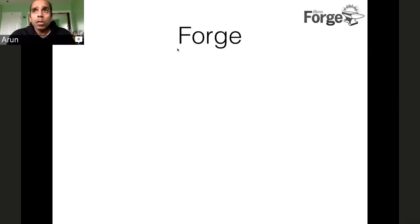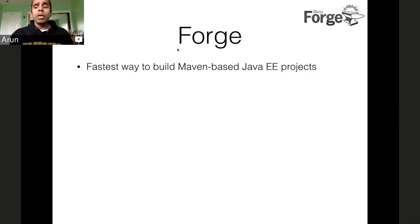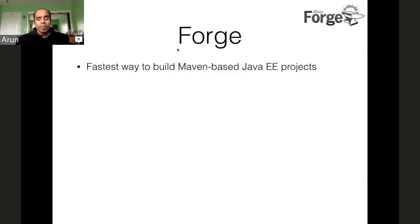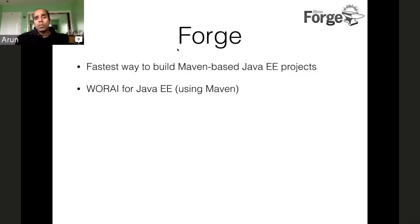JBoss Forge is the fastest way to build your Java EE applications using Maven. One of the hairy things about Maven is you need to remember all the dependencies and what plugins need to go in — you pretty much end up copy-pasting your pom.xml from project to project. With Forge you just say 'JPA is my dependency,' and Forge automatically figures out what's the right actual dependency to add into pom.xml. The concept is write once, run in any IDE — because Eclipse, IntelliJ, and NetBeans all support Maven.